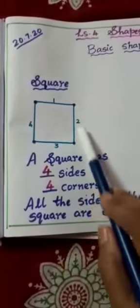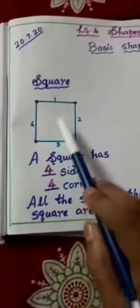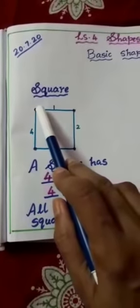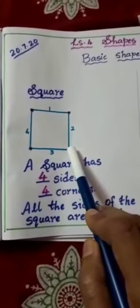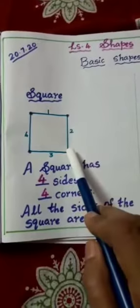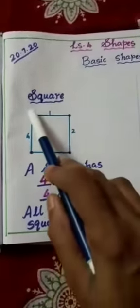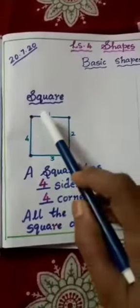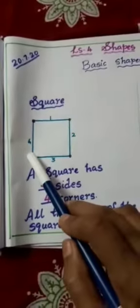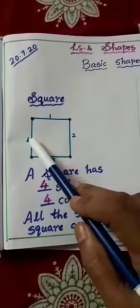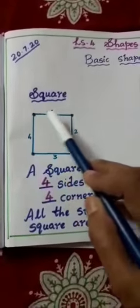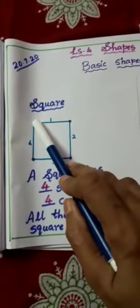This is a square. It has four sides. Side means straight lines — sleeping lines and standing lines are all called straight lines. It has four sides: first side, second side, third side, fourth side. And it has four corners: first corner, second corner, third corner, fourth corner. Corner means the meeting point of two sides.